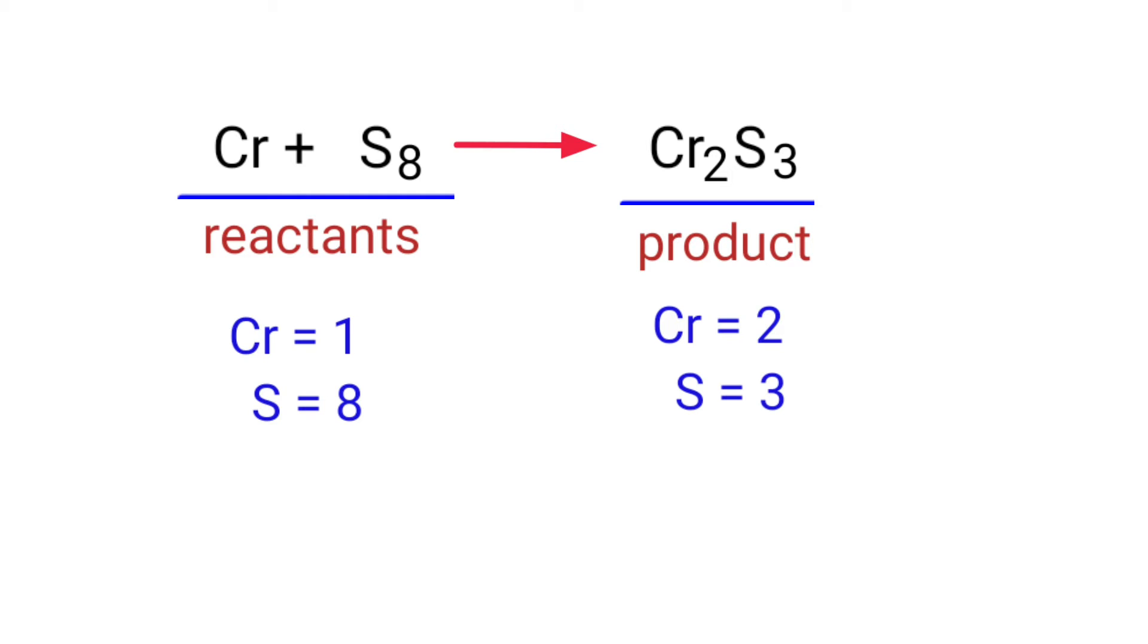To balance the chemical equation, we need to make use of coefficients. A coefficient is a number that we place in front of a chemical formula.